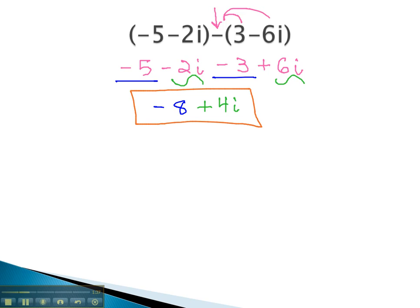This problem is now completely simplified. Adding complex numbers is simply combining like terms, just like we have always done before.